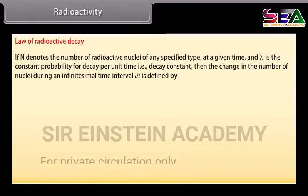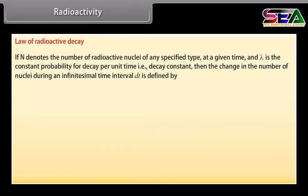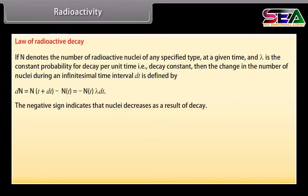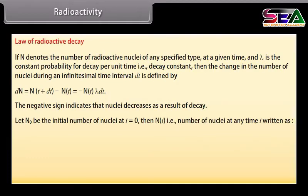Law of radioactive decay: If N denotes the number of radioactive nuclei of any specified type at a given time, and λ is the decay constant (probability for decay per unit time), then the change in number of nuclei during an infinitesimal time interval dt is dN = N(t+dt) − N(t) = −N(t)·λ·dt. The negative sign indicates that the number of nuclei decreases as a result of decay. The solution is N(t) = N₀ · e^(−λt), where N₀ is the initial number of nuclei at t = 0.